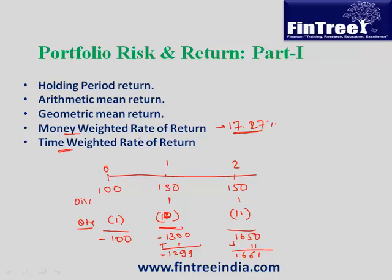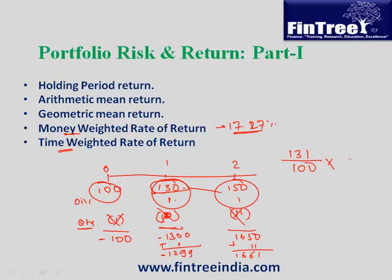For time weighted rate of return, the simple rule is to assume the fund manager could purchase only one stock — ignore all quantity, it becomes irrelevant. First period: invested 100, which became 130 plus 1 dividend, so HPR1 = 131/100. Second period: reinvested at 130, which became 151, so HPR2 = 151/130. Notice the numerator and denominator differ — the dividend is not reinvested. Then take the second root of the product since this covers two years.